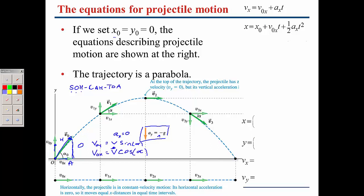If we set x₀ and y₀ equal to zero, we can write these equations. Because there is no acceleration in the x-direction, the x-velocity is not going to change — it's always going to be the same magnitude and always in the x-direction.